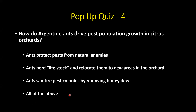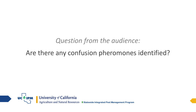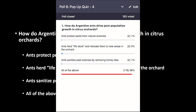Quiz: How do Argentine ants drive pest population growth in citrus orchards? The answer is all of the above — 96% of participants got that correct. The ants protect pests from natural enemies, herd livestock and relocate them to new areas, and sanitize pest colonies by removing honeydew.